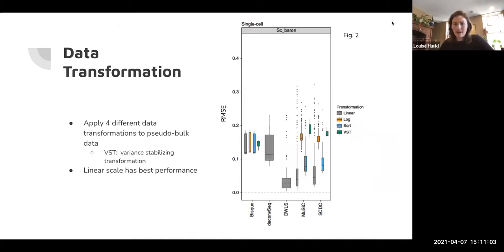The first thing they look at was data transformation. They apply four different data transformations: linear, which is basically no transformation, then log of the counts, square root of the counts, and VST, which is variance stabilization transformation. My understanding is that it removes the reliance of the mean. Basically their finding was that the linear transformation is by far the most accurate in each method. For the bulk methods too, the linear, aka no transformation, is the best way to go. That's what they use moving forward for the rest of the methods.